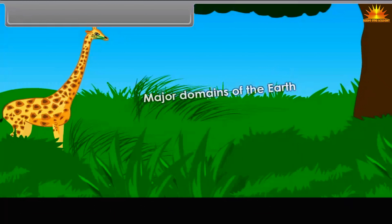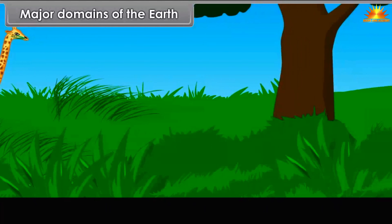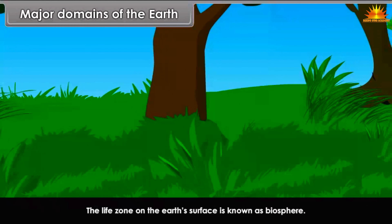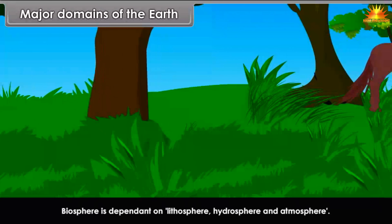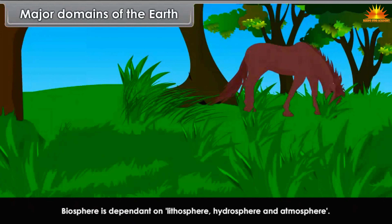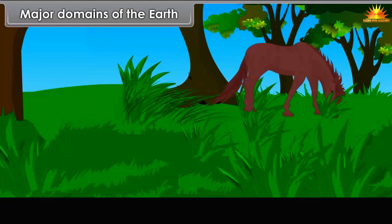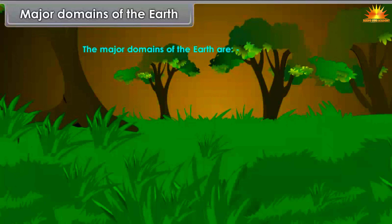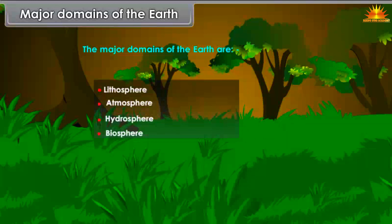The life zone on the Earth's surface is known as Biosphere. Biosphere is dependent on Lithosphere, Hydrosphere and Atmosphere. These are known as the domains of the Earth. The major domains of the Earth are Lithosphere, Atmosphere, Hydrosphere, and Biosphere.